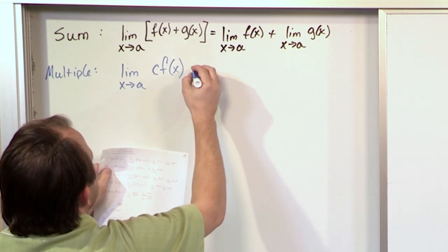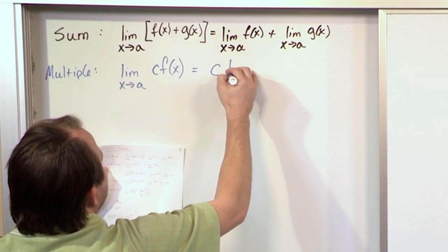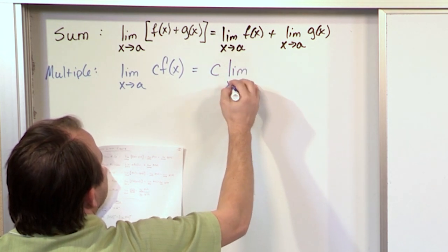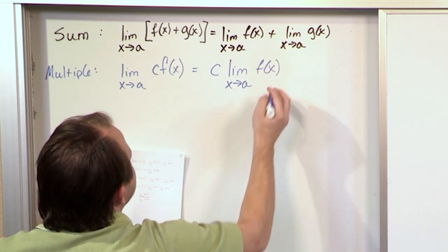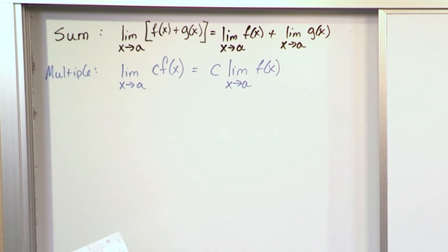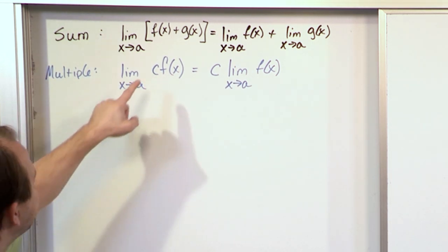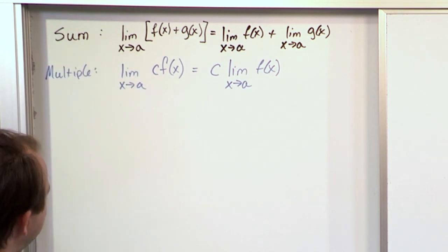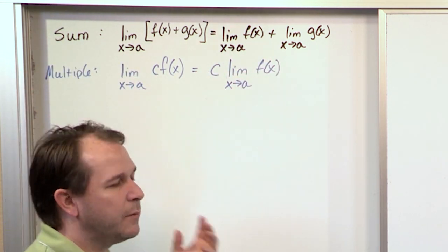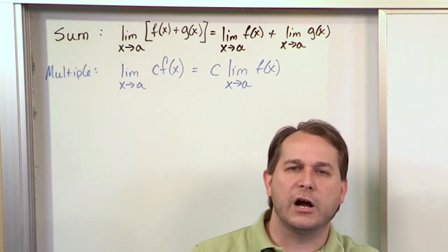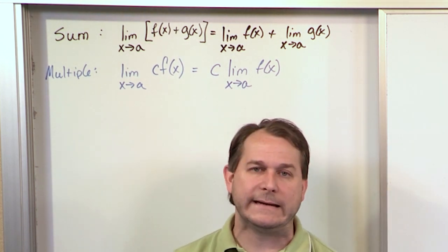Then basically you can take the constant out and multiply it times the limit as x goes to a of f of x. So what it's basically saying is if I'm taking the limit of a number multiplied by a function, then I can just take that number totally away, take the limit of the function, get the limit, and then go back and multiply it. I can basically remove the constant from the outside, deal with it later, and then multiply them at the end.